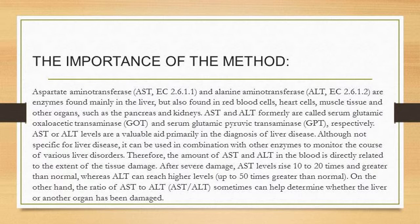After severe damage, AST levels rise 10 to 20 times greater than normal, whereas ALT can reach higher levels, up to 50 times greater than normal.